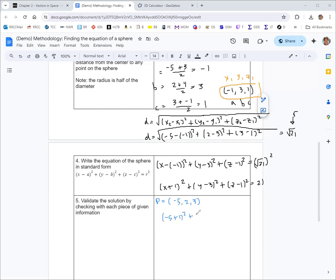Replace x, y, and z with -5, 2, and 3. That should give you 21. For Q, (3, 4, -1), same idea. Should also give you 21. So we know P and Q are points on this sphere that we found the equation for.